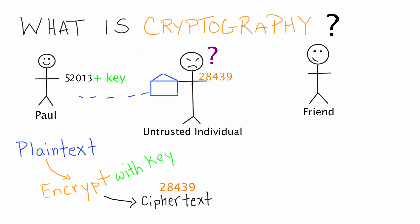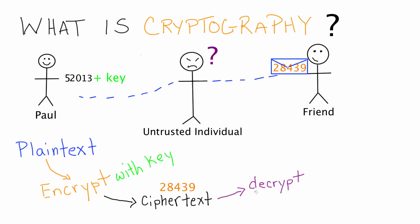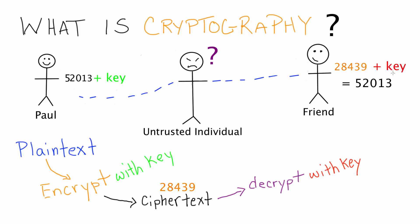Now if the message continues to Paul's friend, Paul's friend will need a way to decrypt the message and recover the original plain text. So in order to convert the ciphertext into plain text, Paul's friend needs to decrypt the ciphertext. In order to decrypt the ciphertext, the friend will need a decryption key. Using the decryption key, the friend will be able to convert the ciphertext into the numerical value corresponding to the plain text. Once the friend has the plain text value, he can convert it back into the original message. Now that the numerical value is converted back to the English language, the friend has retrieved the original plain text that was sent in Paul's message.